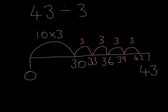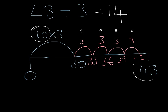Now we count. We've used 10 lots of 3, then 11, 12, 13, 14 lots of 3. And then we're going to have a look at how many remainders we've got. From 42 to 43, that's remainder 1.